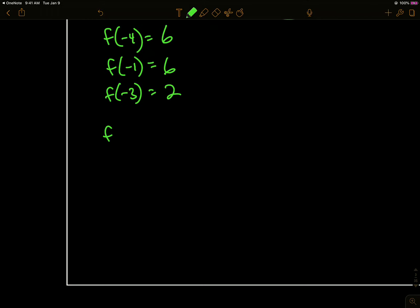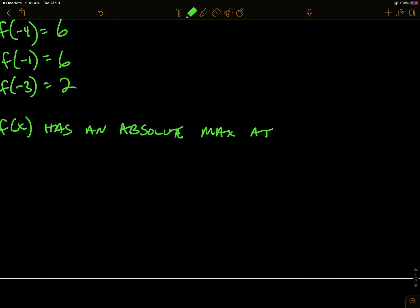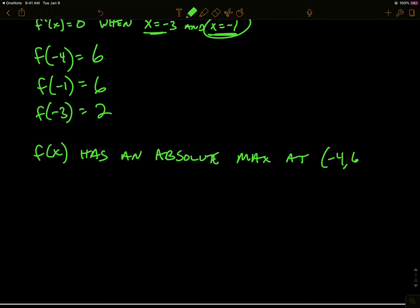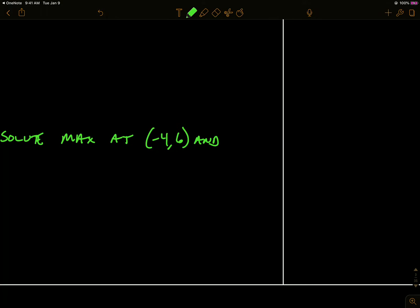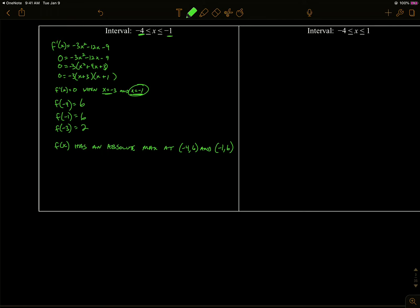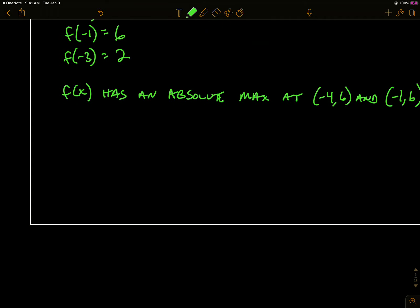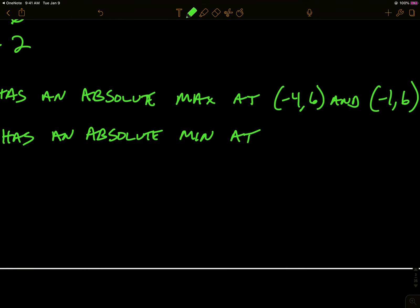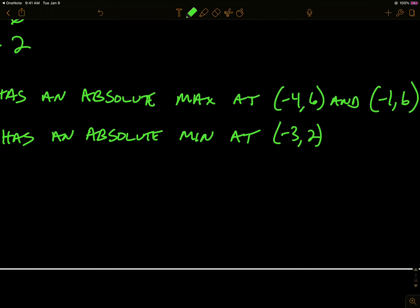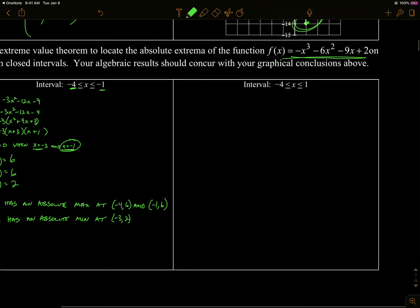Now if we want to find our absolute maximum and minimum, we have an interval. We'll check all our values. The first value we check is our leftmost endpoint, f of negative four. Then we'll check our other endpoint, f of negative one. Then we check the possible relative extrema — we're already testing negative one, so we just have to test negative three. Plugging those into the original function: f of negative four produces six, f of negative one produces six, and f of negative three produces two. So the absolute maximum occurs at negative four, six, and negative one, six. The absolute minimum is at negative three, two.